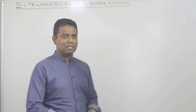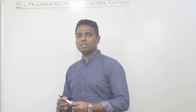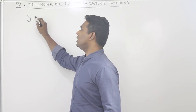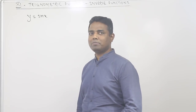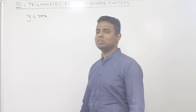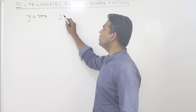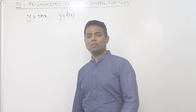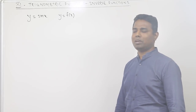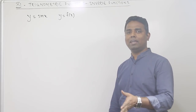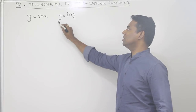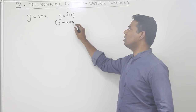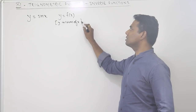Let's try to understand how a trigonometric function looks. Suppose you say y is equal to sin x — is it a trigonometric function? Yes, because it is in the form y is equal to f of x. Anything in the form y equals f of x is a function — y in terms of x.